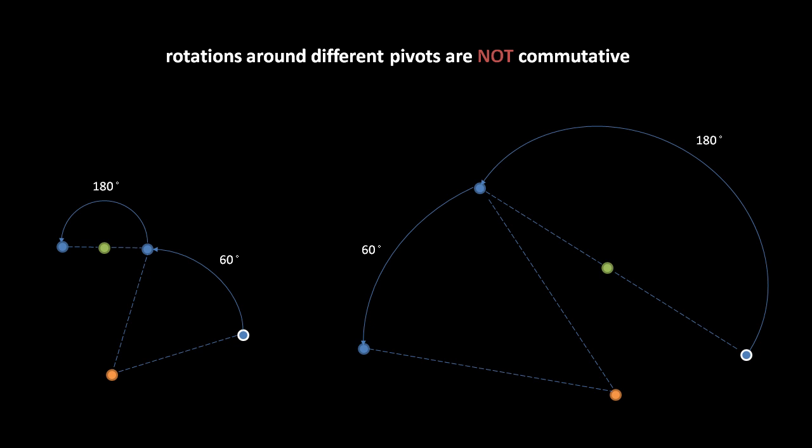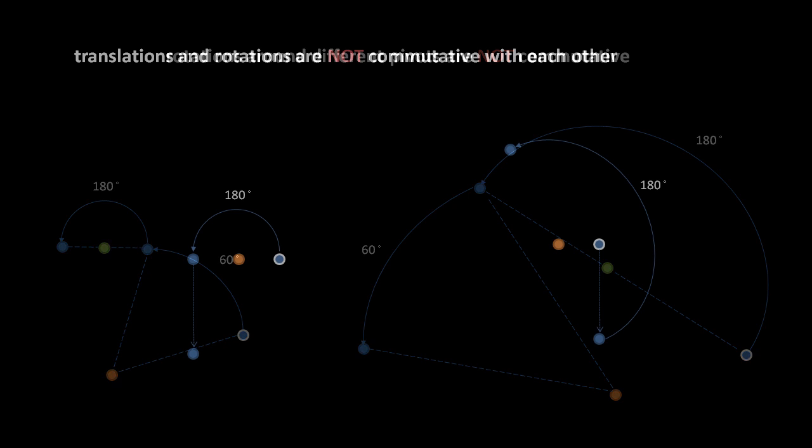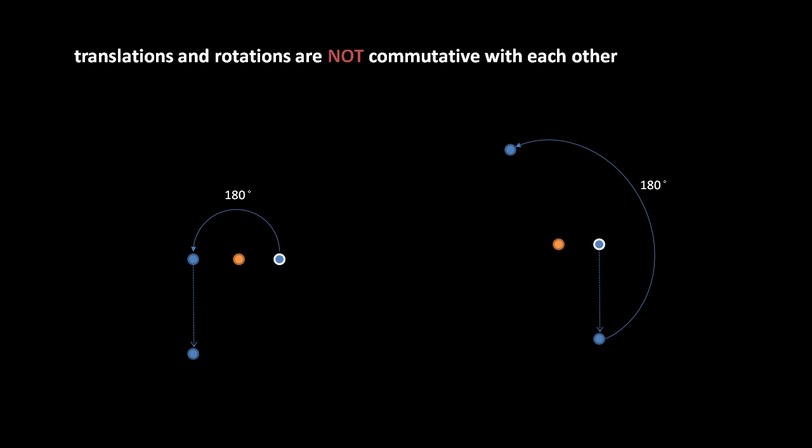Once we start mixing rotations around different pivots, we have to be careful of the rotation order. Similarly, translations and rotations are not commutative with each other, so we must be careful about the relative order when we mix them together. Here, for example, if we first rotate 180 degrees around the orange dot, then translate downwards, we end up in a very different spot than if we reverse the operations, first translating downwards the same distance, then rotating 180 degrees around the orange dot.